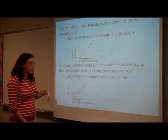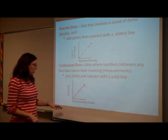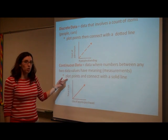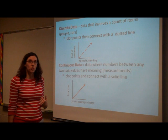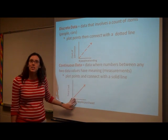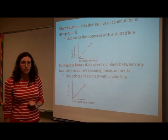Continuous data is where every single number will work. Here we have pounds of apples purchased and the total cost. You can have a fractional part of a pound. That's why we do a solid line, because every point along there will work.